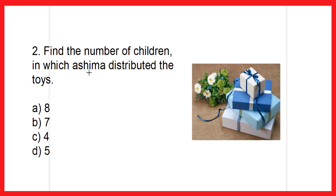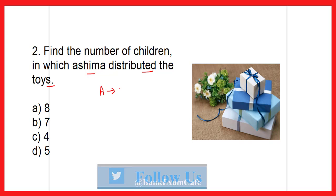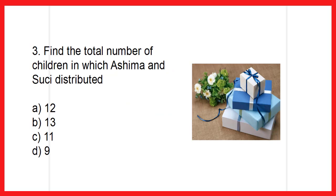Find the number of children among whom Ashima distributed the toys. Ashima distributed 35 toys and each child got 7 toys. So 35 divided by 7 — seven fives are 35 — she distributed toys to 5 children. Therefore option B is the correct answer.